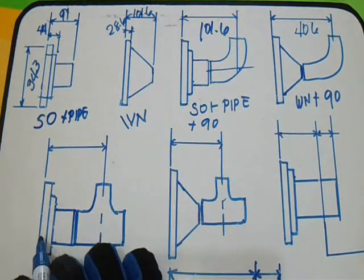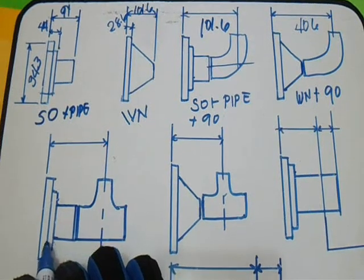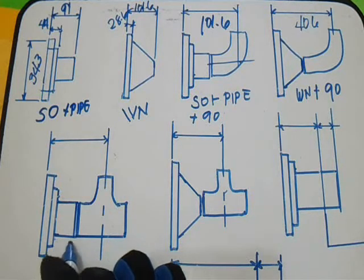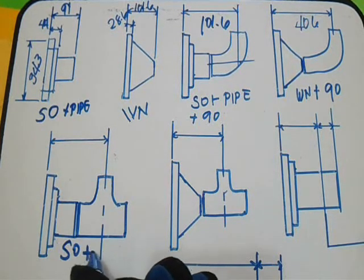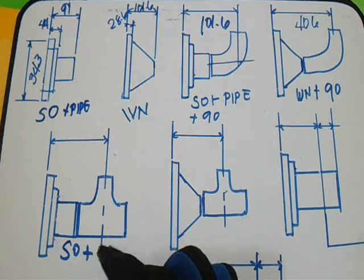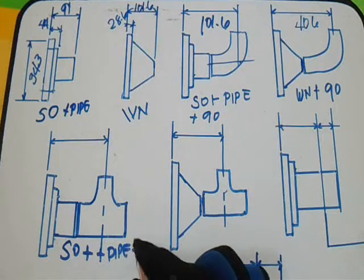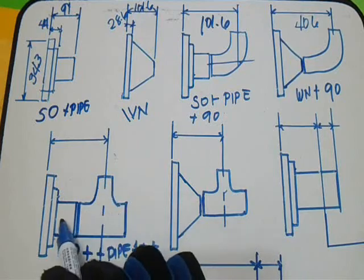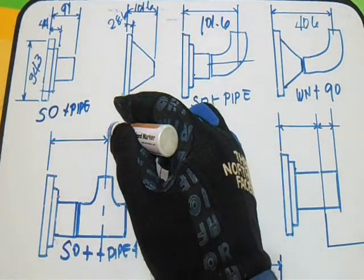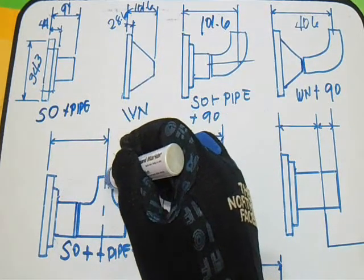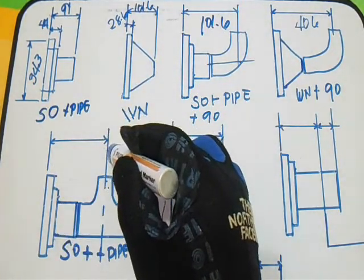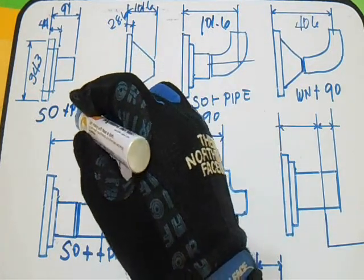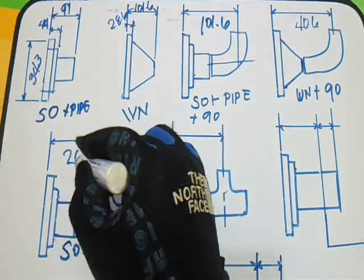Next, this is slip-on flange SO. We have SO plus pipe plus tee. The center of the tee to the slip-on flange, we have 269.